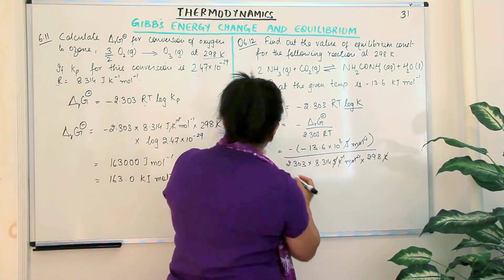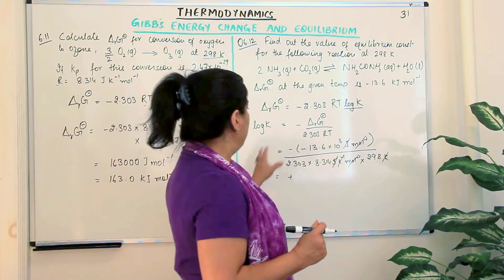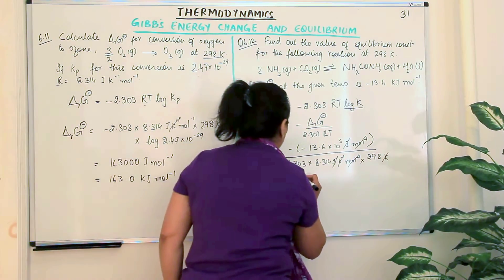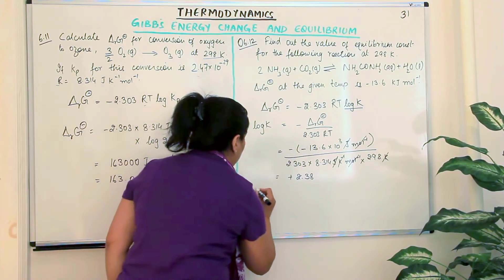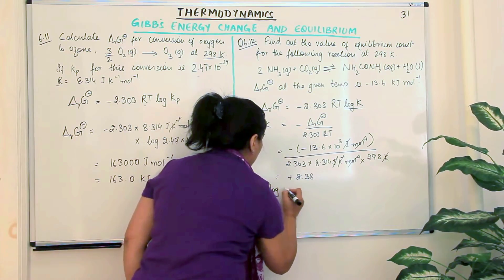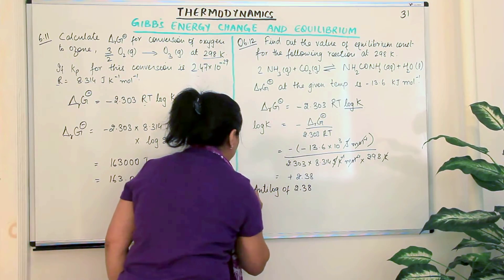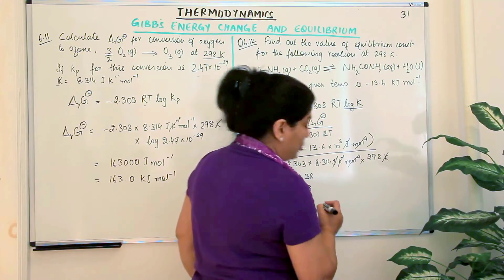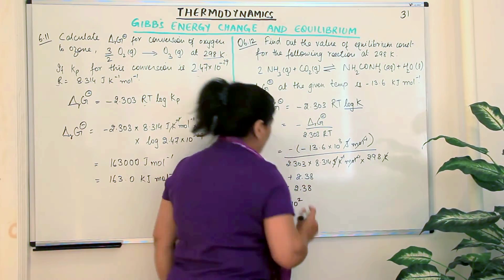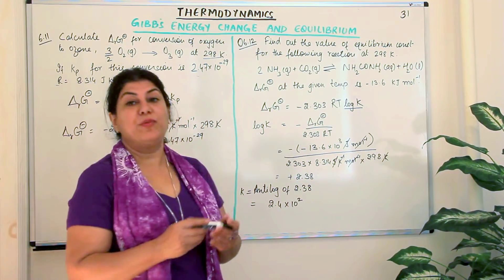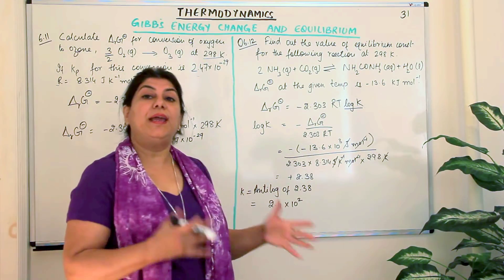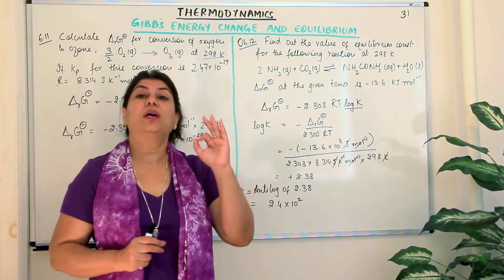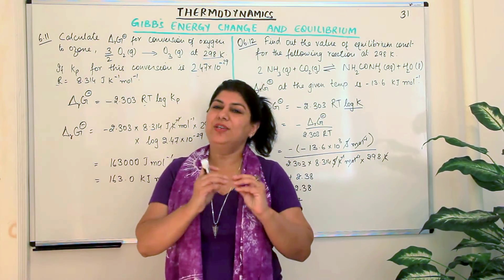The two negatives become a positive, and when you calculate this, log K = 2.38 — positive 2.38. Now taking the antilog of 2.38 gives K = 2.4 × 10². So the antilog of log K is K, giving K = 2.4 × 10². Again, it was a simple substitution using the formula delta RG° = −2.303 RT log K.